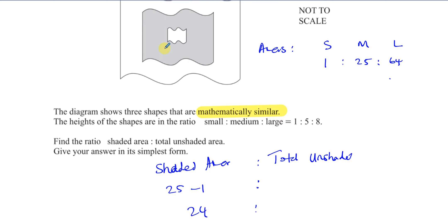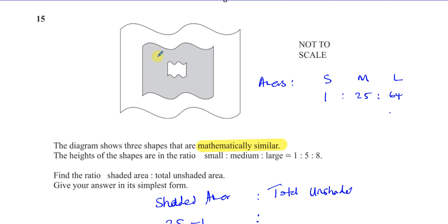The total unshaded area is just this part over here. So it's basically the whole thing take away 25. It's going to be, well, actually, no. So it's going to be 64 take away 25, or we can say it's going to be 25 take away 1, actually.